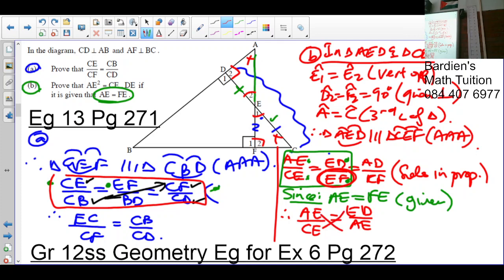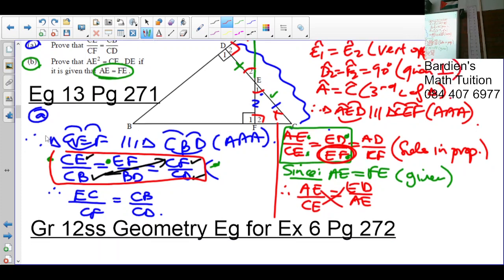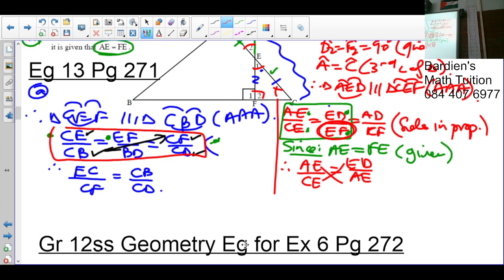By doing that, if I cross-multiply, what's going to happen? So it becomes AE squared is equal to CE times ED. And that is what they wanted us to do.